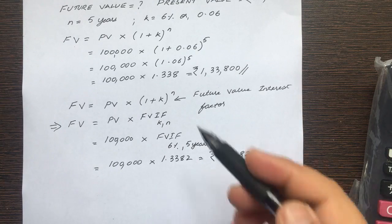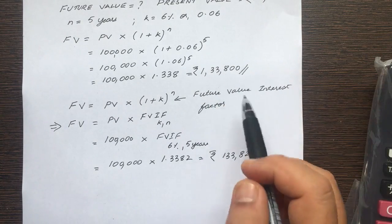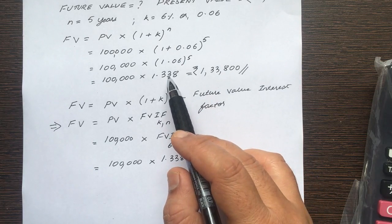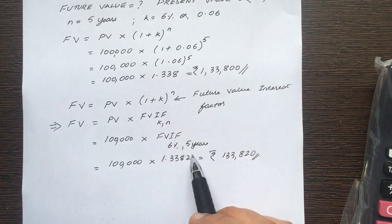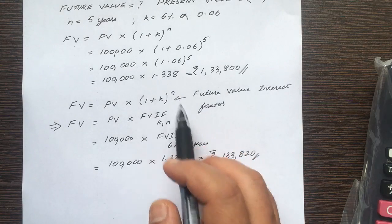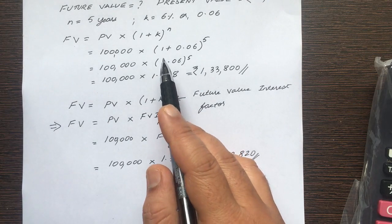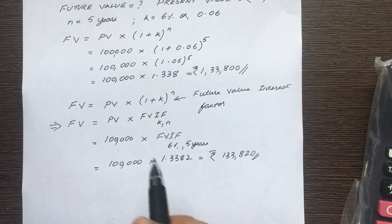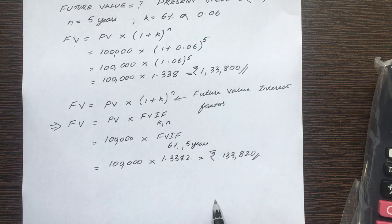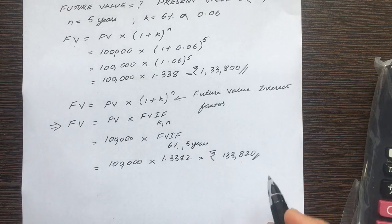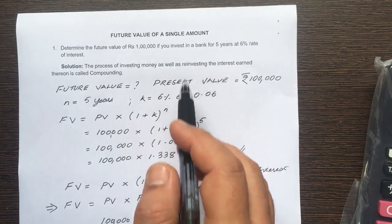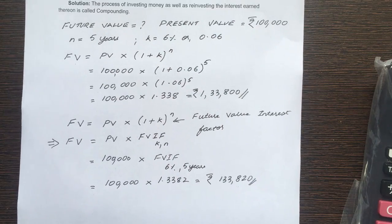Now, the same as the previous method — it is the same result. Here we got 1,33,800 and here 1,33,820, because in the first method we took only 3 decimal places, using 1.338. But with 1.3382 from the table, the future value interest factor under both methods is the same. This is the method we are going to use for solving such problems. This is the future value of a single amount or a single cash flow. Let's go on to the next problem.